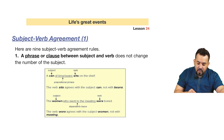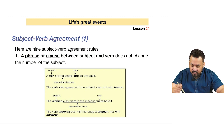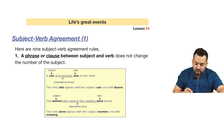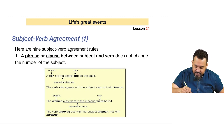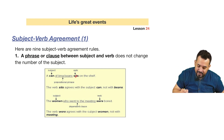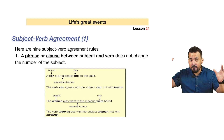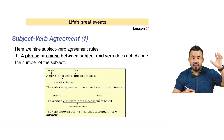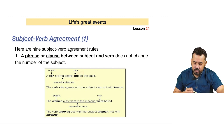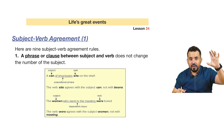Let's look at nine subject-verb agreement rules. Rule number one: a phrase or clause between the subject and the verb does not change the number of the subject. For example, 'a can of Lima beans sits on the shelf.' The prepositional phrase 'of Lima beans' starts with the preposition 'of,' but the verb is still singular because the subject 'a can' is still singular. The verb 'sits' agrees with the subject 'can' — here 'can' is not a modal; it's a container, like a can of beans.